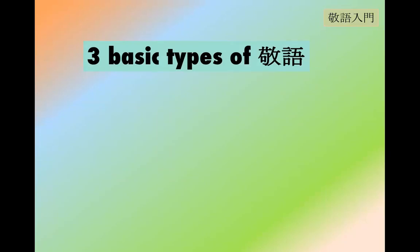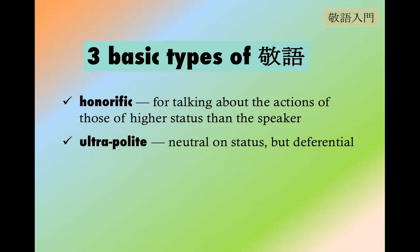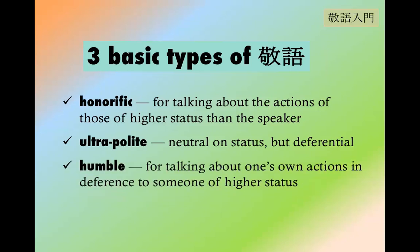There are three basic types of Keigo. There's the honorific, where you talk about the actions of those of higher status than yourself. There's the ultra polite, which is neutral on status but generally deferential. And then there's the humble form, talking about one's own actions in deference to someone of higher status. So: honorific when talking about someone else, humble when talking about yourself, and ultra polite is generally deferential regardless of status.